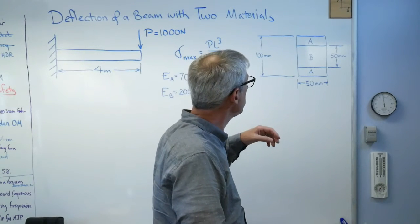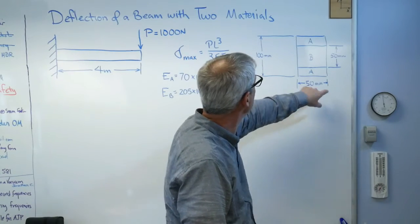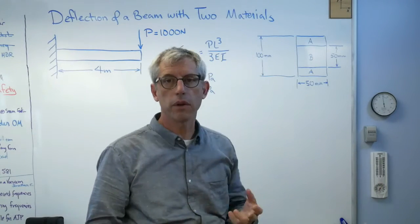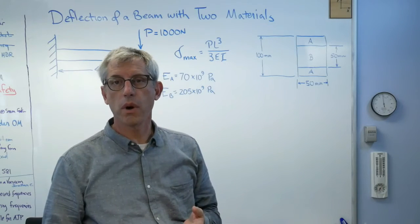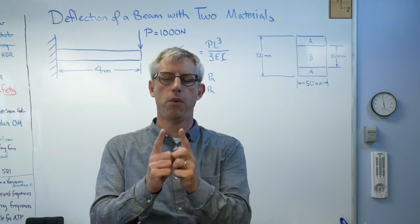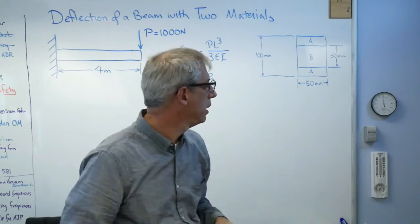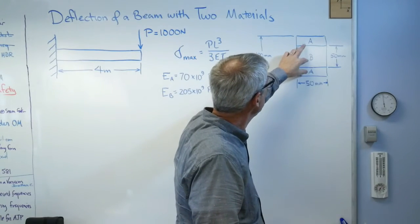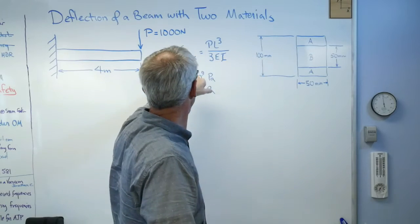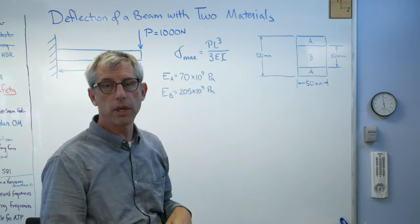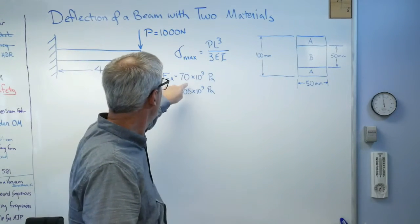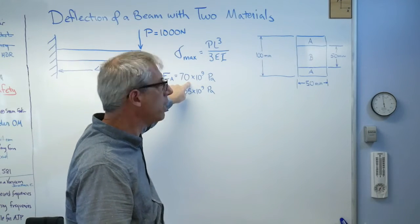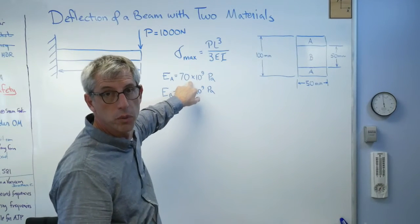So let's imagine we've got a beam that's 50 millimeter by 100 millimeters high. If you're into English units that's about two inches wide and about four inches high, so two by four pretty much. And it's made out of two materials. Material A will have an elastic modulus of 70 gigapascals, and if you're up on your elastic modulus data, that corresponds to aluminum.